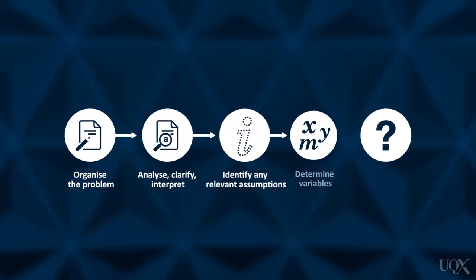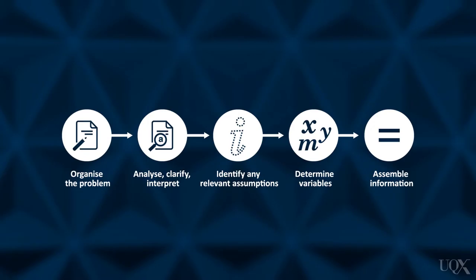Determine any variables. Assemble all known information and identify any information still needed. This process is not always linear — you may need to cycle through these steps several times before they are completed.